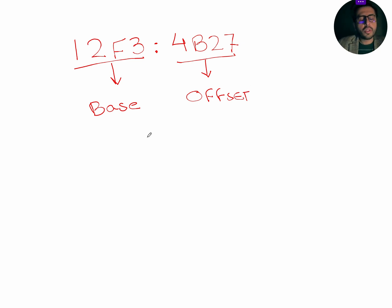Let's convert this logical address to physical address. To do that, first write base address 12F3. After writing the base address, append 0 in the end of the base address and then write the offset address. Now, add both addresses.